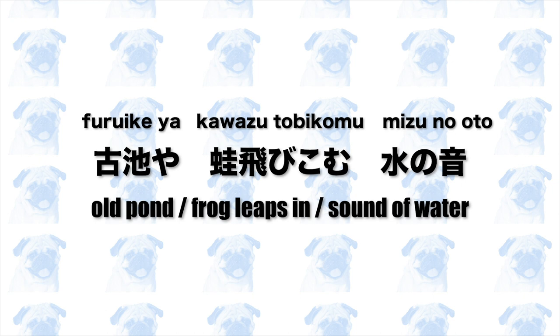Now let's go back to the examples and identify the kireji in each of them. Ya is one of the three most common kireji, so you would put a full stop after ya. Ya has various meanings, but in this context it expresses the poet's admiration of the scenery depicted in the poem. This ya creates a slight pause and allows you to visualize a calm and quiet pond, but this tranquil imagery is subsequently betrayed by the leaping movement of the frog and the resulting sound.